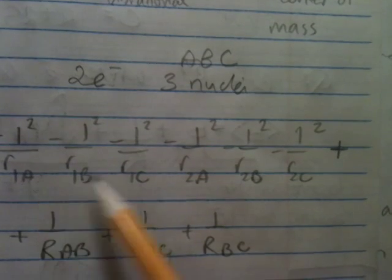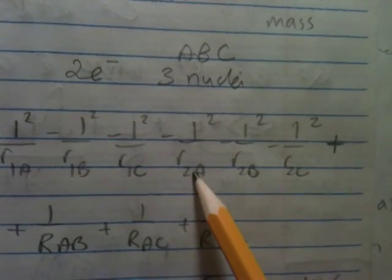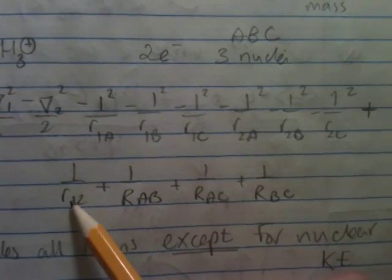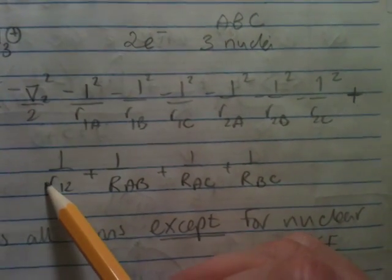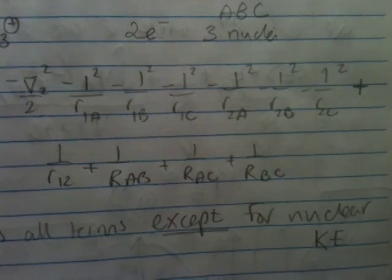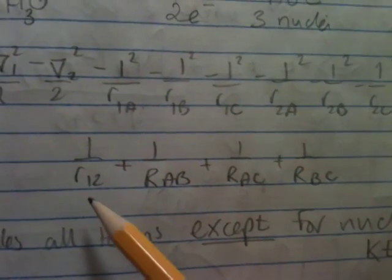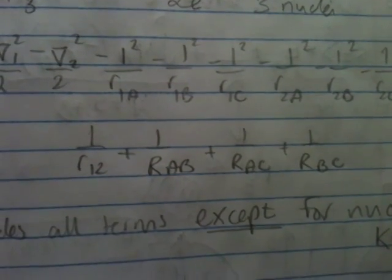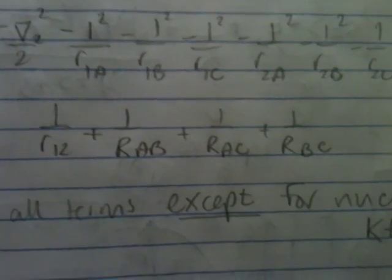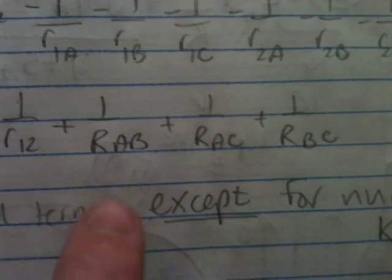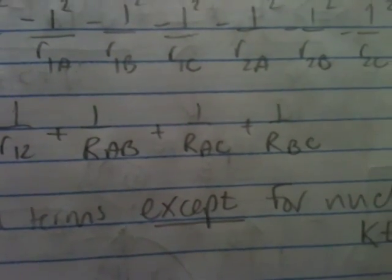So you have three for electron one, three for electron two, and then you have positive one over R1, two, those are your two electrons interacting. This is the same as R2, one, so that's why you have that. And then you have your interactions of your nuclei, so between AB, AC, and BC.